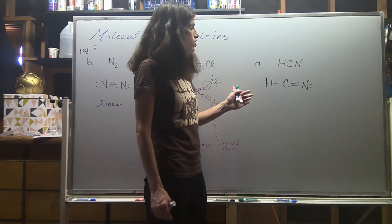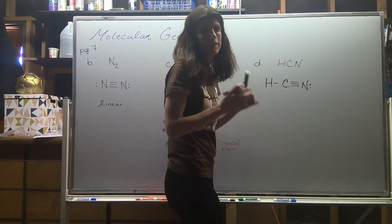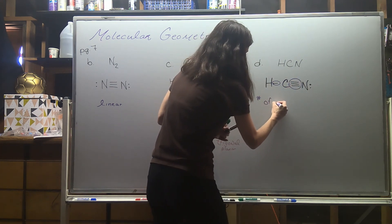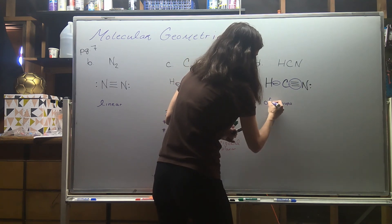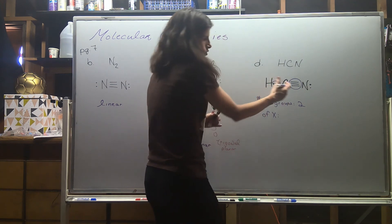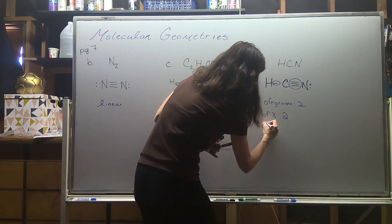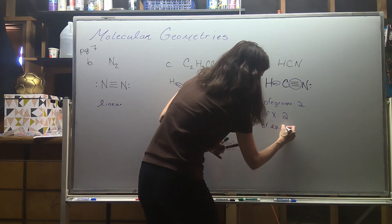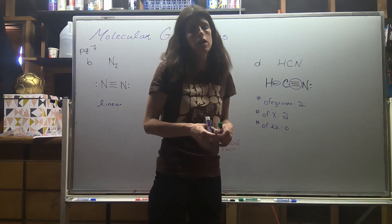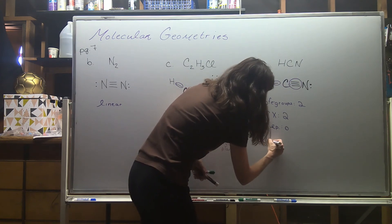In the example of HCN, we have just one central atom — carbon. I'm only concerned with what's directly attached to that carbon: a single bond and a triple bond. So the number of electron groups is two. The number of X's is also two — hydrogen and nitrogen are both bonded. Number of lone pairs is zero; the lone pair on nitrogen doesn't count since it's not directly on the central atom. A 2-2-0 combination is a linear molecular geometry.